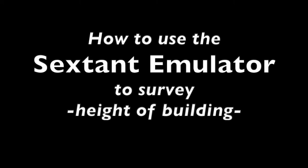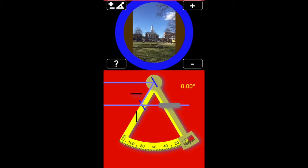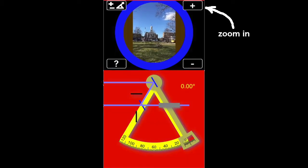We can also use a sextant to do some surveying. Here we'll measure the height of a building. First, zoom in.